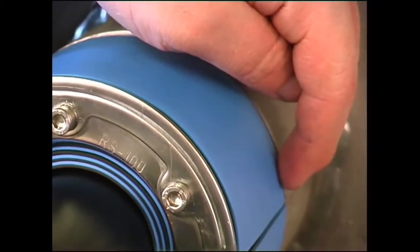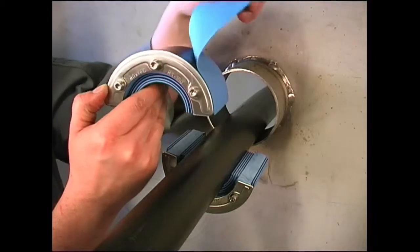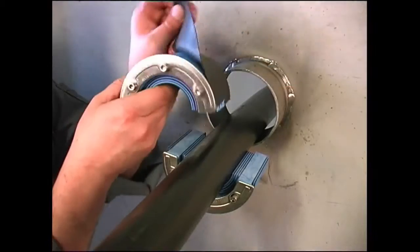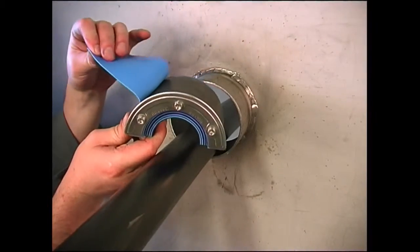Now adapt the outer diameter of the seal to the inner diameter of the sleeve. Peel off each layer until the seal fits tightly inside the sleeve hole.